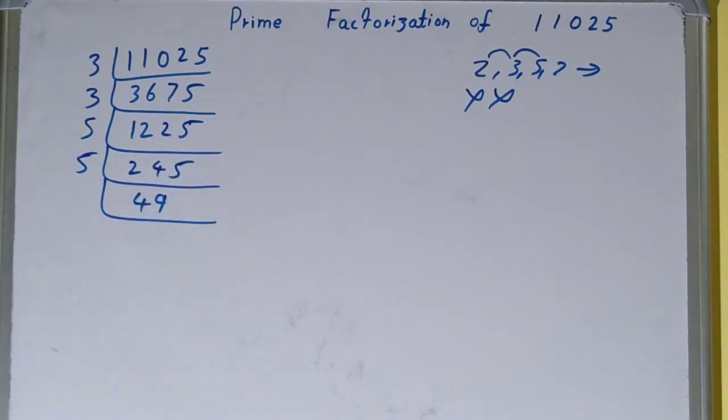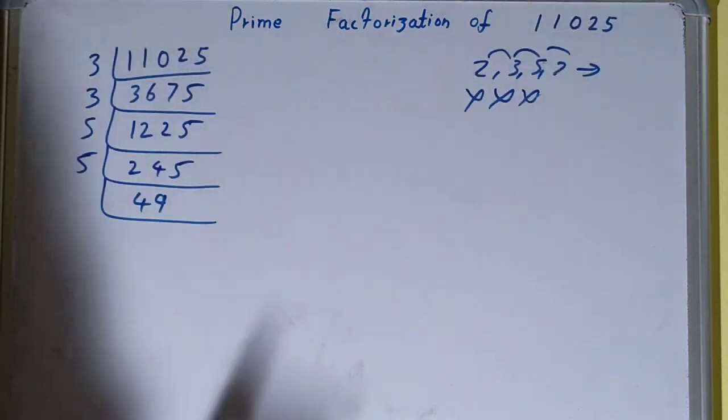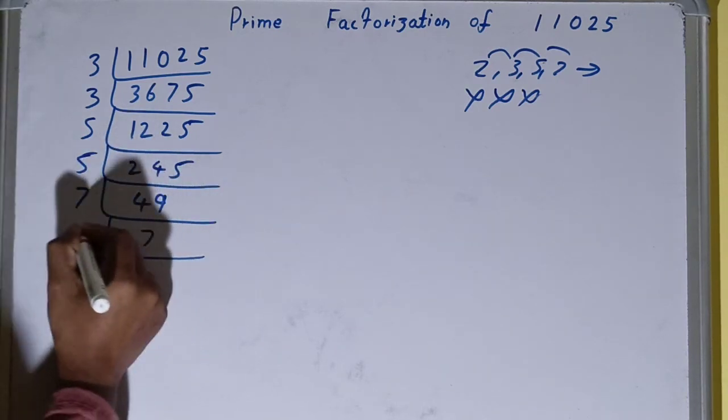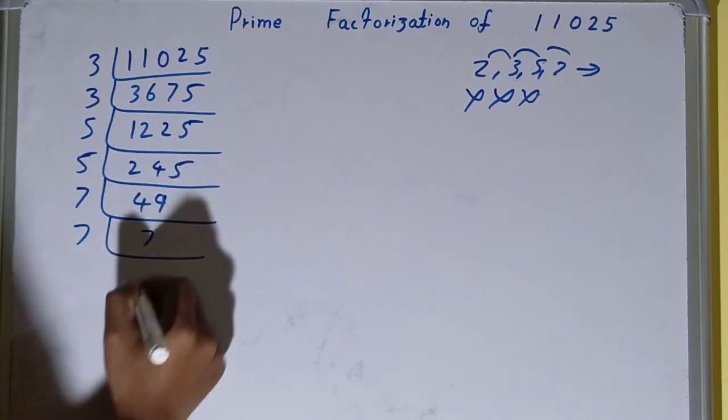Now this 49 is a perfect square of 7. So it is not divisible by 5. It is divisible by the next lowest one, that is 7. So just divide it and you'll be getting 7, and 7 is further divisible by 7. So divide it, you'll be getting 1.